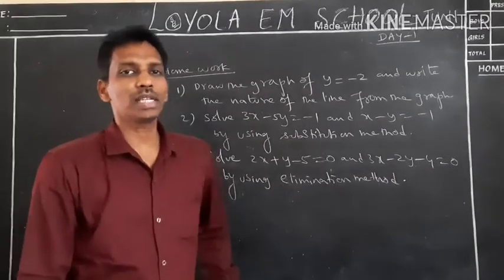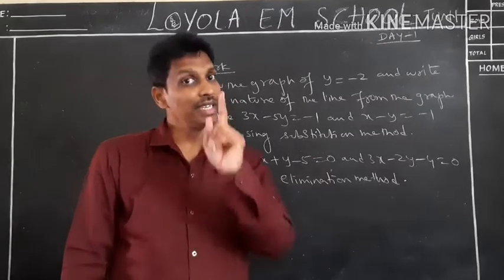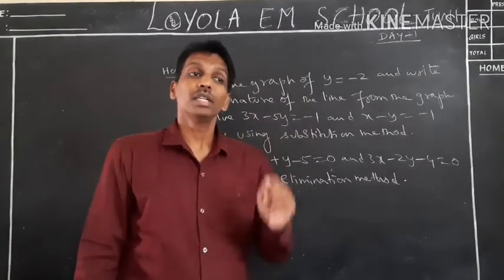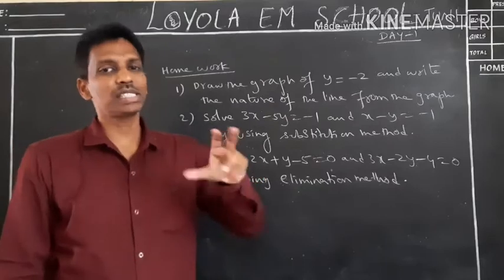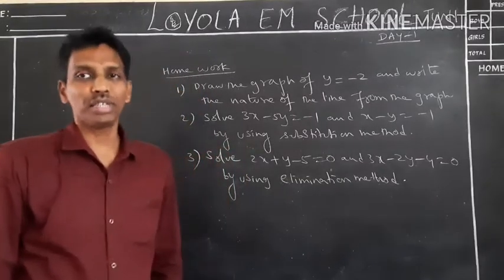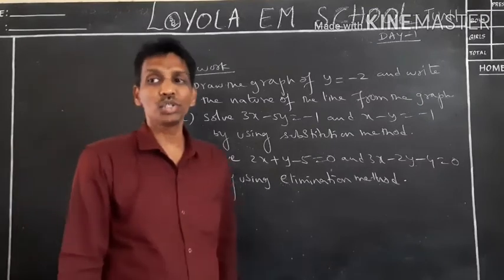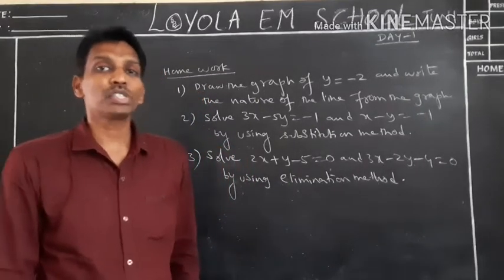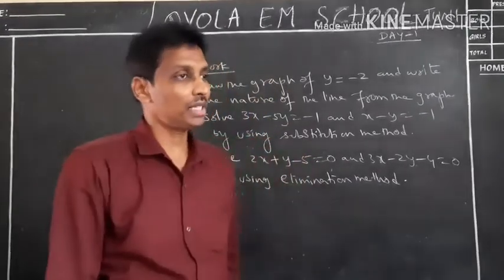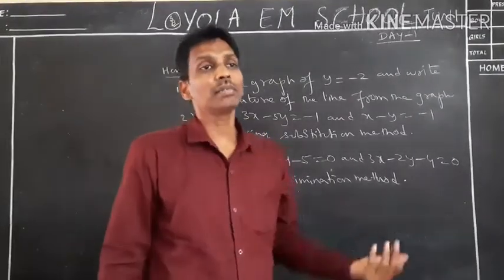In today's class, we discussed linear equations in two variables, the definition and two graphical problems, the general form of a pair of linear equations, and how to solve them using three methods: the substitution method, elimination method, and graphical method. We covered the substitution and elimination methods today.